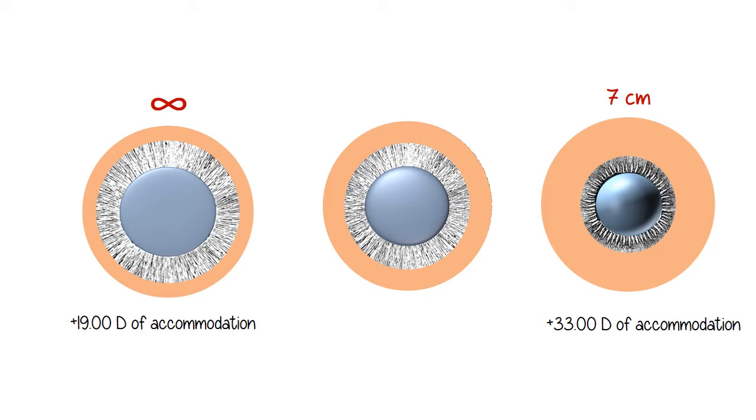Now the stimulus that causes the eye to accommodate is blur. When something's brought closer or we want to focus on something closer, it's blurry, but our eye very quickly accommodates to make it clear. The eye on the right is viewing something at seven centimeters from the eye. The eye is fully accommodated, which means that this person is probably either a child or a high myope because seven centimeters is very close. But the eye is fully accommodating, or we say maximum accommodation, which for this eye is a plus 33 diopters.